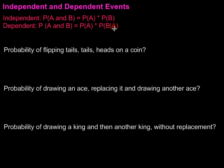So, here we go. Let's take a look at a few examples. This first one says the probability of flipping tails, tails, heads on a coin on a series of three flips. Well, for the first flip, first of all, is it independent or dependent?